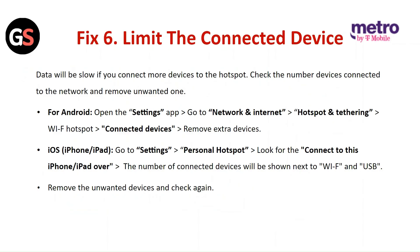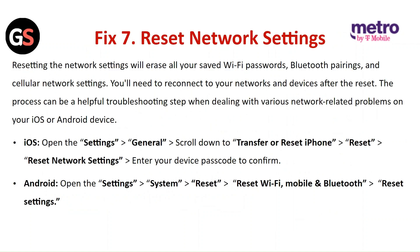For iOS, go to Settings, then Personal Hotspot. Look for 'Connect to this iPhone or iPad over' and the number of connected devices will be shown next to Wi-Fi and USB. Remove the unwanted devices and check again.